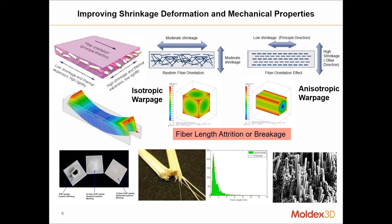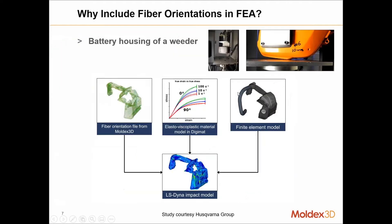Based on flow direction, you will have a fiber orientation. In the cross-section of the thickness, you are going to see the fiber orientation will be more oriented to your flow direction, and also random with respect to your flow direction in the cross-section.